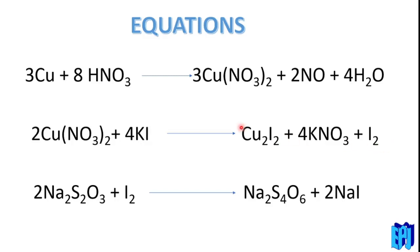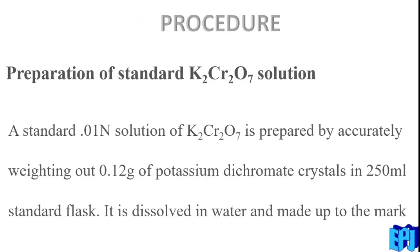Copper is directly proportional to iodine — the amount of iodine is proportional to the amount of copper. That is why this titration is known as iodometric titration. When the titration is carried out, this iodine reacts with sodium thiosulphate: Na2S2O3 forms Na2S4O6 + 2NaI. This is the same equation we learned in the dissolved oxygen experiment.